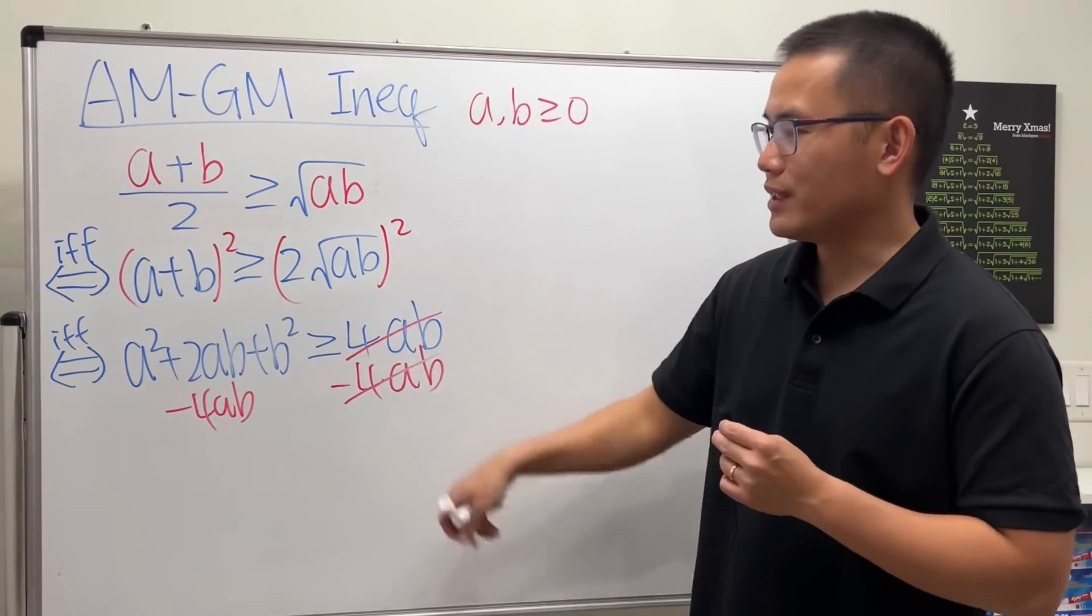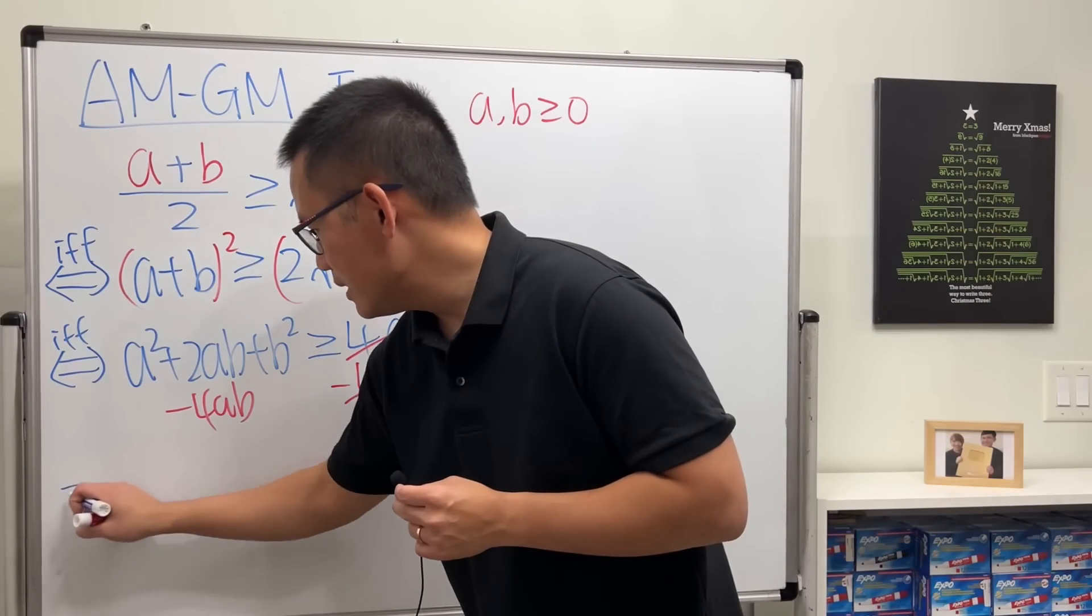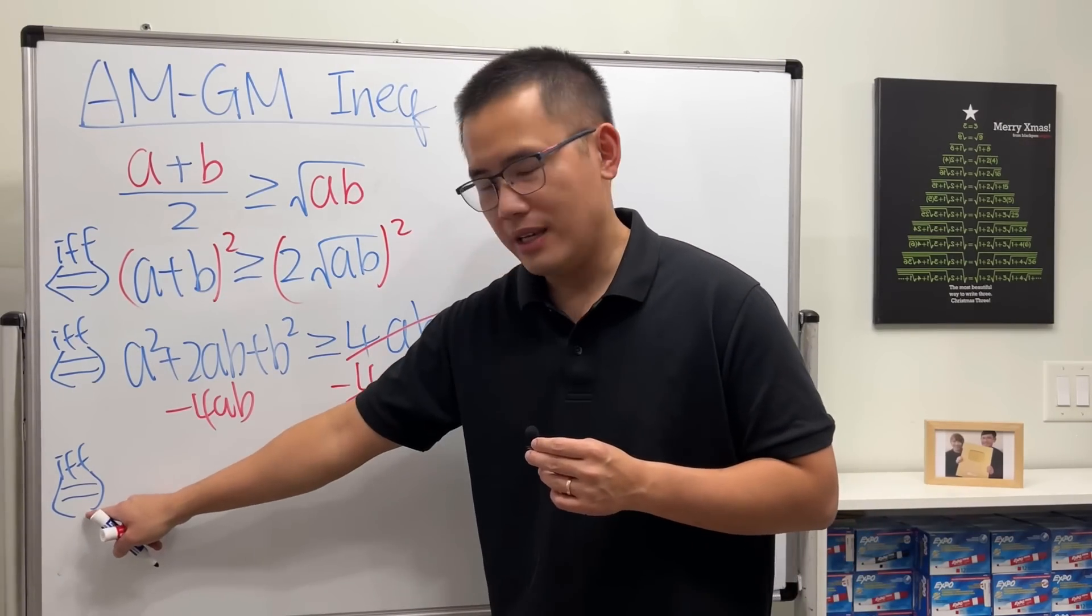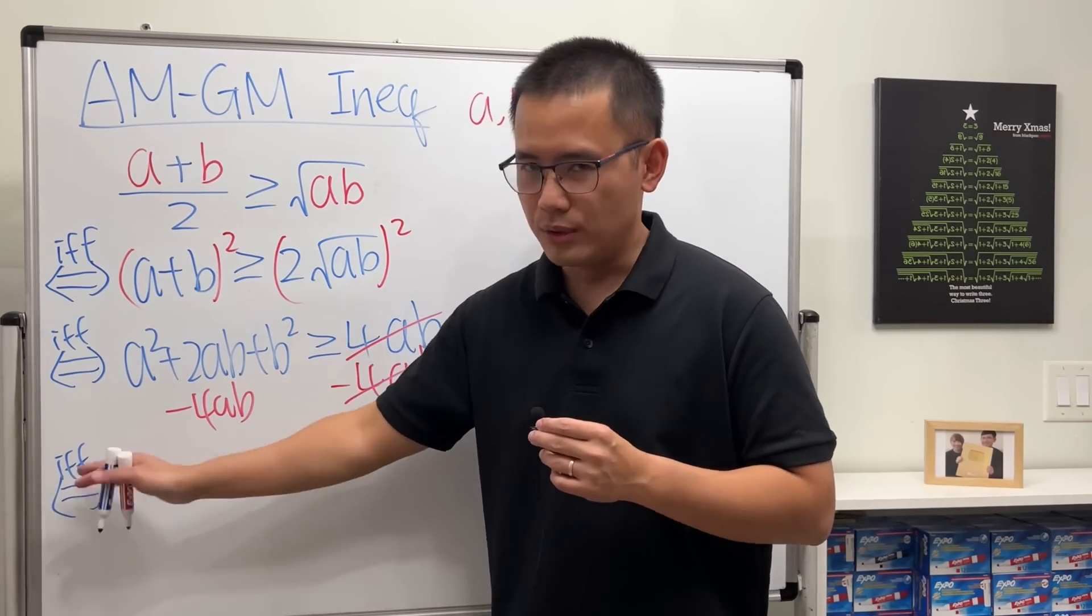So this and that cancel and we get zero. And again, this will be if and only if. In fact, you can just either draw the arrow or write down 'iff'—you don't need to do both. I don't know what I'm doing, but anyways...